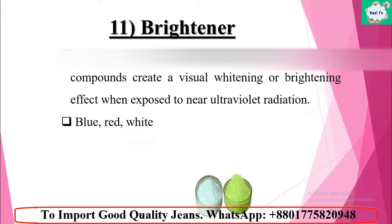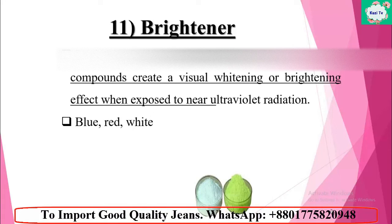Number eleven: brightener. Brightening agent is used to improve the brightness of fabric. This chemical compound creates a visible whitening or brightening effect when exposed to near ultraviolet radiation. In the washing factory, three kinds of brightener are used: blue brightener, red brightener, and white brightener.